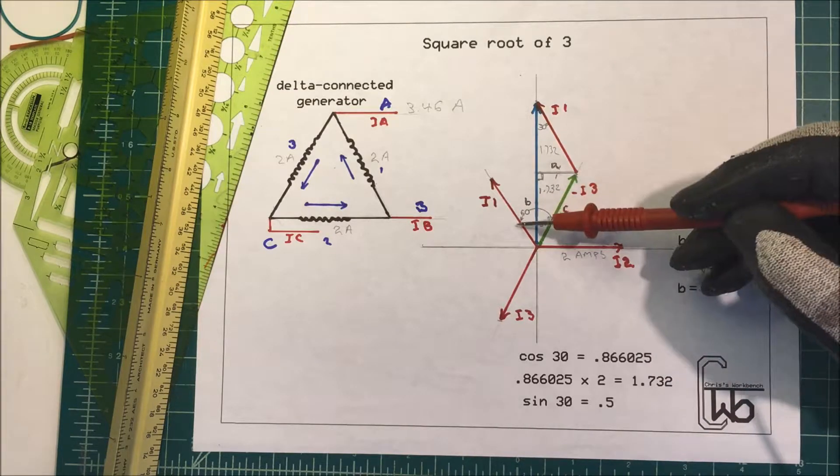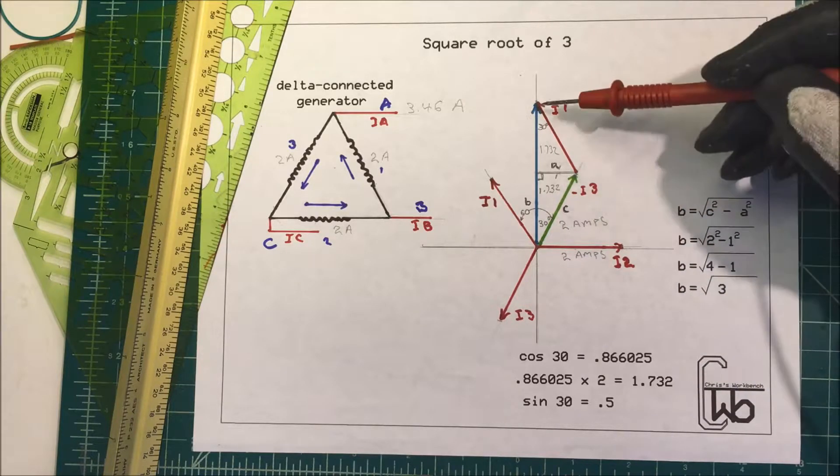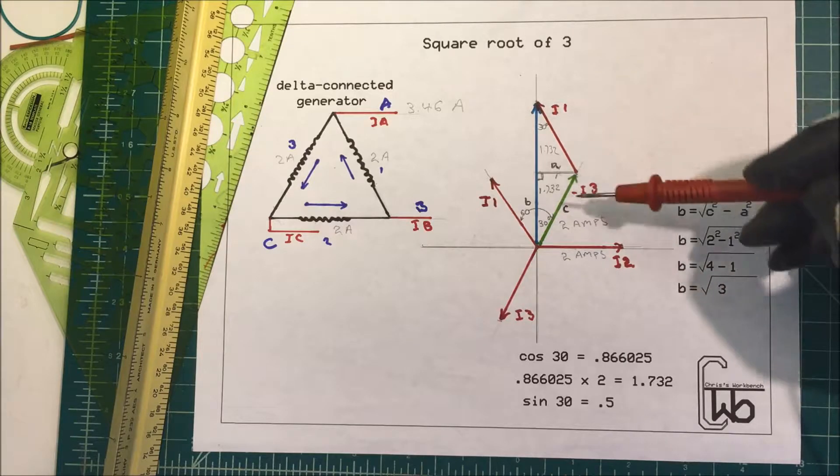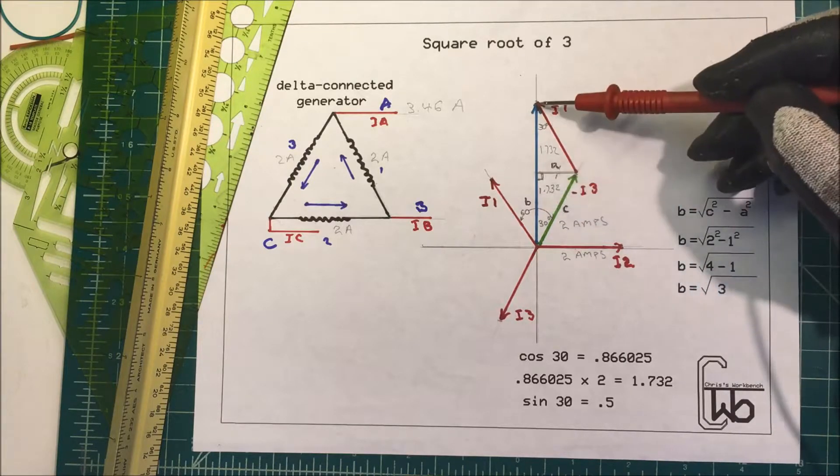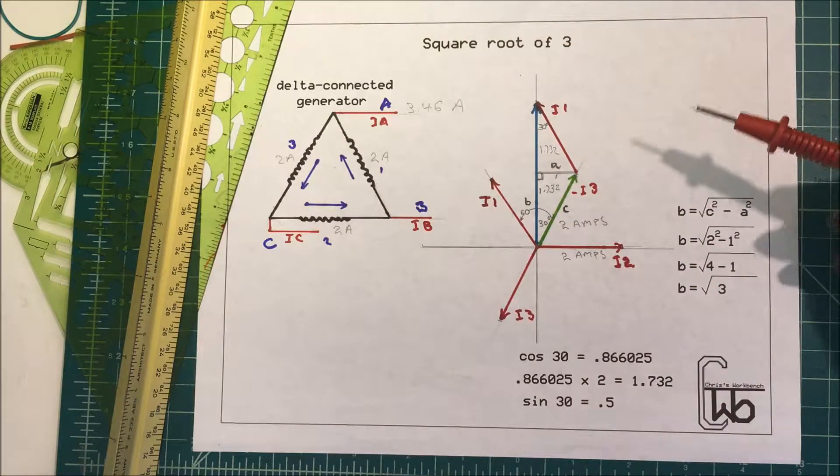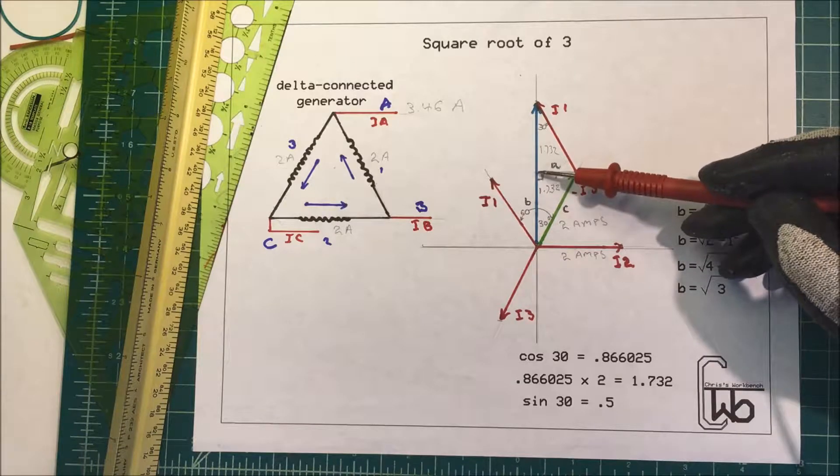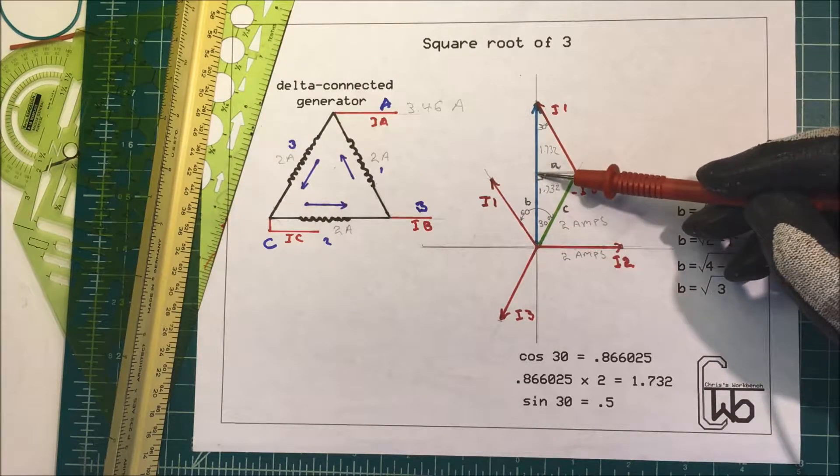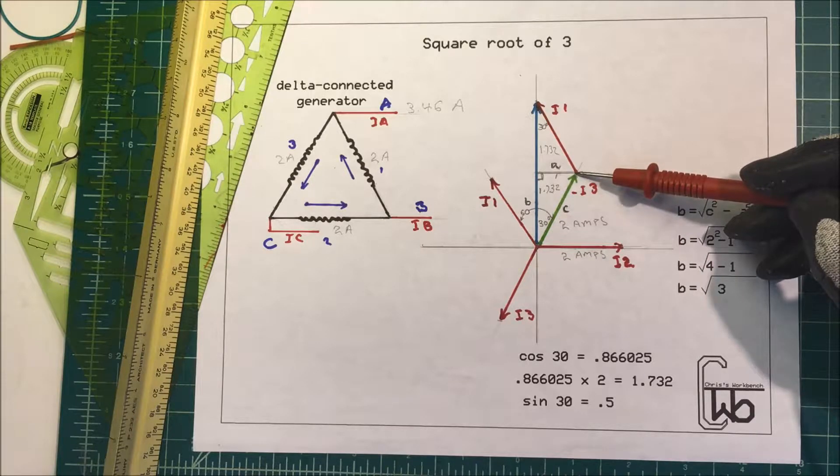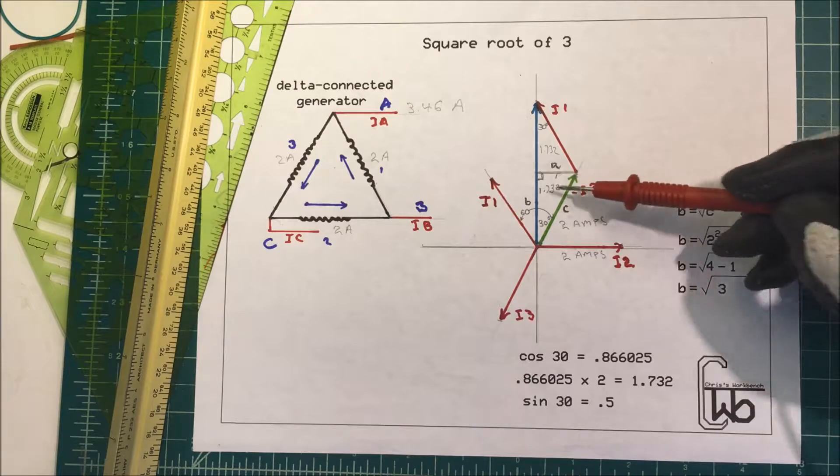For vectors you can take the tail of one vector and put it on the head of the other vector and determine the force in this direction. We could just physically measure that and find our current in A, but we'll do it mathematically. We're going to take an imaginary line perpendicular to this vector and draw it over to this point here. This is going to form two right triangles.